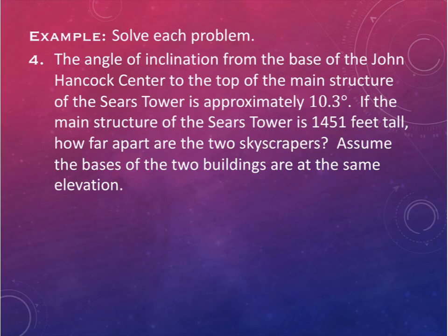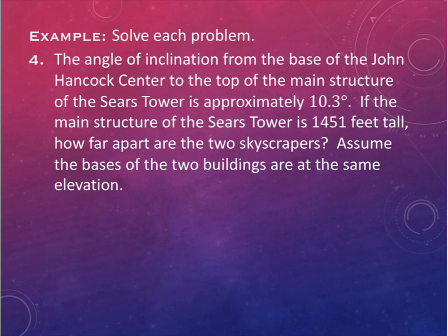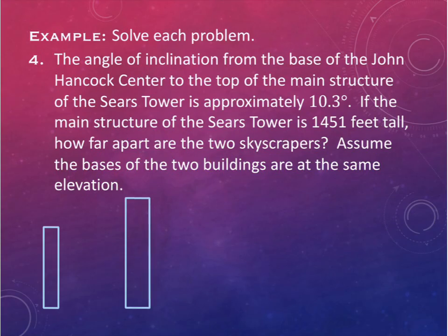That assumption about equal elevation matters - in places like Seattle, every building can be at a different elevation due to hills. Here in Oklahoma it's flat, but the problem specifies it because readers come from anywhere. We draw two buildings at the same ground level.